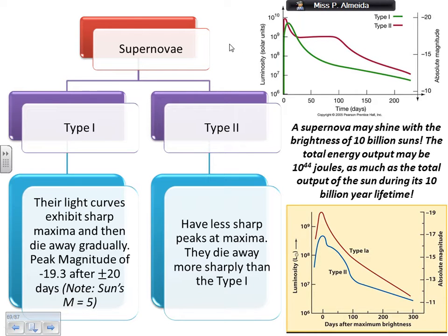Just to give you an idea: a supernova may shine with a brightness of 10 billion suns, and the total energy is going to be more or less 10 to the power of 44 joules — which is actually the total energy output of the Sun during its whole lifetime of about 10 billion years. This gives you an idea of how dramatic and how powerful these explosions are.